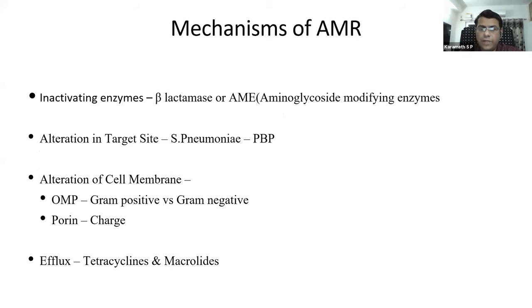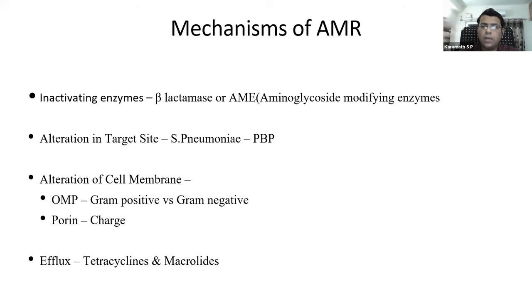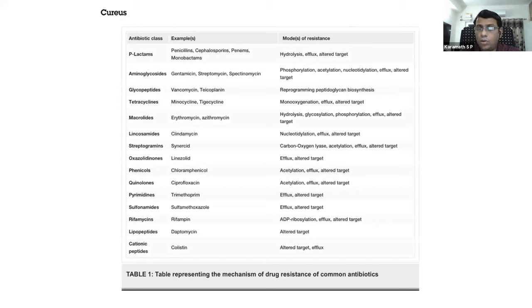The mechanisms of producing antimicrobial resistance include: inactivating enzymes — the classic example being beta-lactamase; alteration in target protein, such as penicillin-binding protein in Streptococcus pneumoniae; alteration in cell membrane, where differences in outer membrane proteins explain why first-generation cephalosporins don't act against gram-negative bacteria; and efflux of antibiotics, where bacteria actively pump out drugs — the classic mechanism behind tetracycline and macrolide resistance.